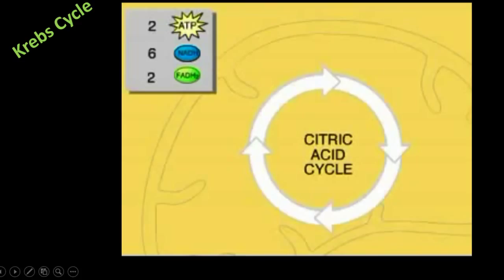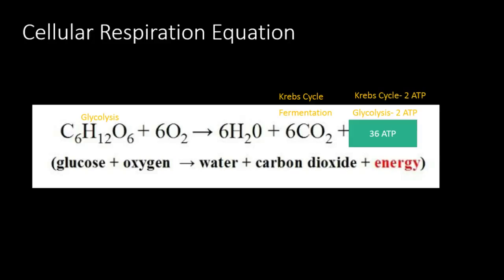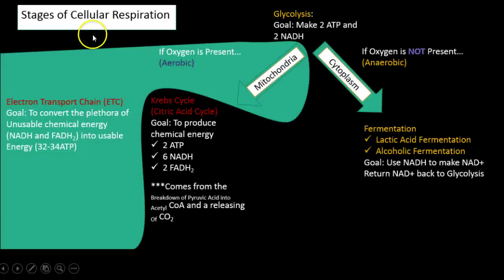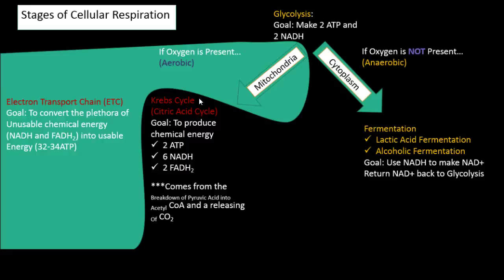Let's revisit the cellular respiration equation. The Krebs cycle is responsible for releasing carbon dioxide inside of the mitochondrion and for two of the 36 ATPs. The Krebs cycle has another name: the citric acid cycle, which is named after the first product formed when the four-carbon sugar and the two-carbon sugar bond together — that's citric acid. So the citric acid cycle and the Krebs cycle are the same thing.